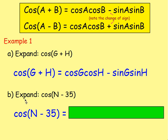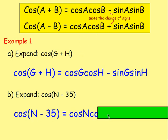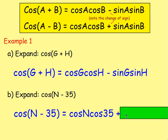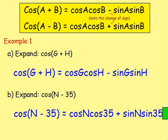Example one part B: expand cos N minus 35. Well for that one, you've got cos of something take away something. So you're swapping A with N and swapping B with 35. So you're going to have, instead of cos A cos B, you're going to have cos N cos 35. Because you've got a minus here, what are you going to have? Plus! Well done, you'll have a plus. And then sin A sin B becomes sin N sin 35.